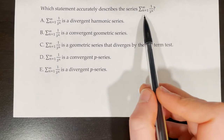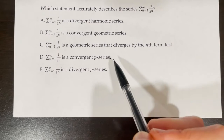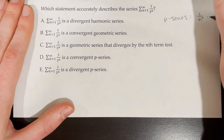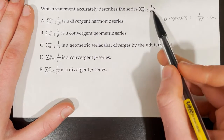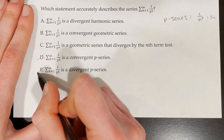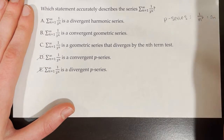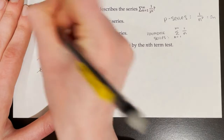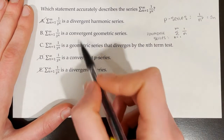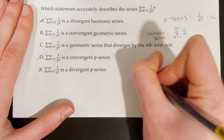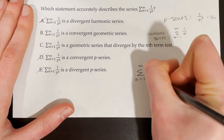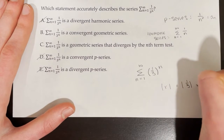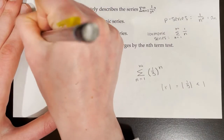Which statement accurately describes the series from n equals 1 to infinity of 1 over 3 to the power of n — is it divergent or convergent, and is it a p-series, harmonic series, or geometric series? For a p-series, a sub n equals 1 over n to the power of p, not p to the power of n, so this is not a p-series. It's also not a harmonic series. We can rewrite it as the sum from n equals 1 to infinity of 1 third to the power of n. Since the absolute value of r equals 1 third, which is less than 1, this series converges — it's a convergent geometric series.